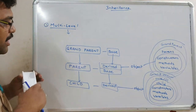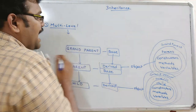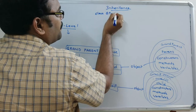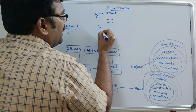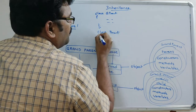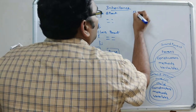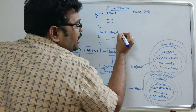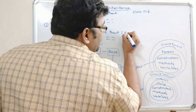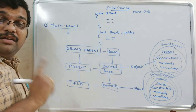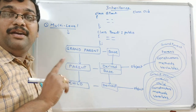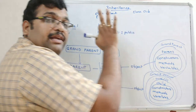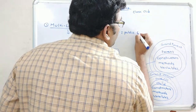So to implement this we write three classes: a grandparent class, a parent class, and a child class. Parent inherits from grandparent using the colon operator. We must mention the access specifier — without it, it defaults to private and can't be accessed in other classes. If it is public, it can be accessed in any class outside.